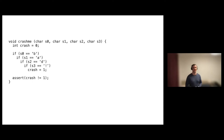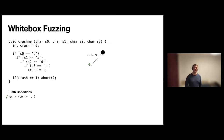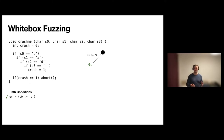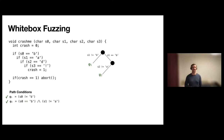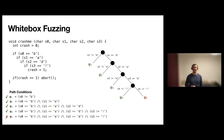I want to start with a small program that takes four characters like a string, and it would crash for the string 'bad!'. There are technically two prevalent forms of testing. One is called white box fuzzing, implemented using symbolic execution, where you look at the source code and construct path constraints. You could have a path constraint where the first character is not a B, or where the first character is B but the second is not an A. You construct this symbolic execution tree, and after exploring all five paths you would see there's a crash. That's white box fuzzing.